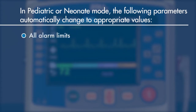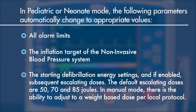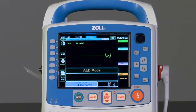When the X-Series Advanced enters either pediatric or neonate mode, the following parameters are changed automatically to age-appropriate values: all alarm limits, the inflation target of the non-invasive blood pressure system, the starting defibrillation energy settings, and if enabled, subsequent escalating doses. The default escalating doses are 50, 70, and 85 joules. In manual mode, there is the ability to adjust to a weight-based dose per local protocol.